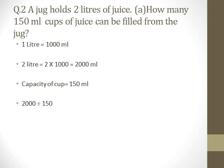This means 13 cups will be fully filled, but the 14th cup will not be completely filled. So you cannot answer 14, and you don't express it as a decimal since you are counting filled cups. The answer is: 13 cups of 150 ml can be filled from the 2-liter jug.